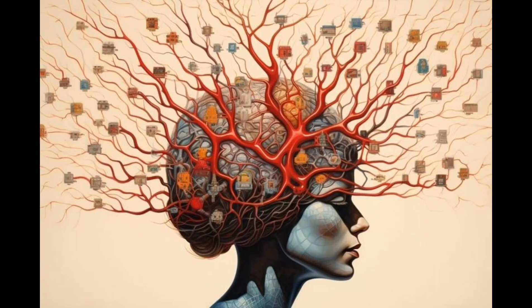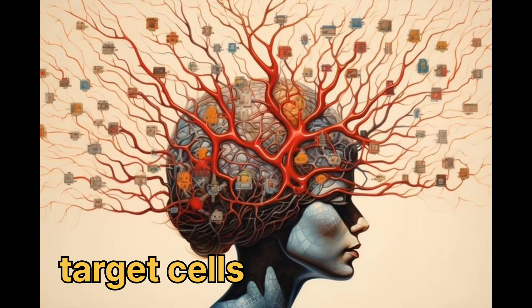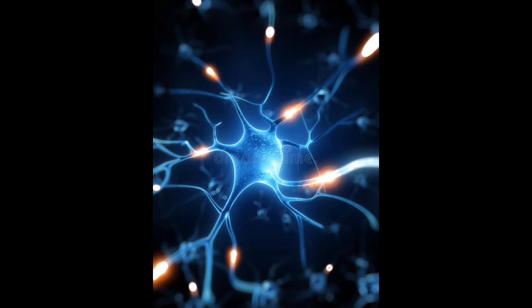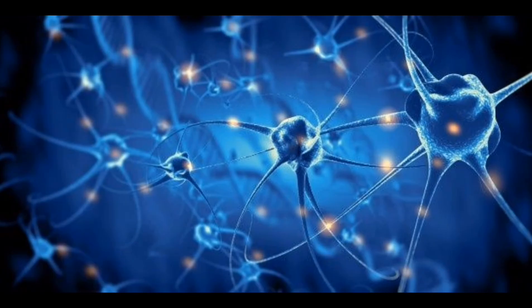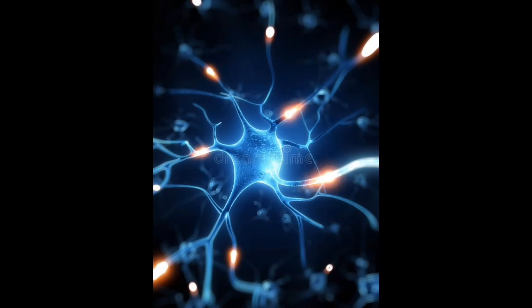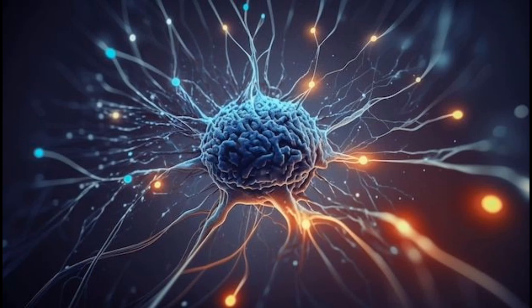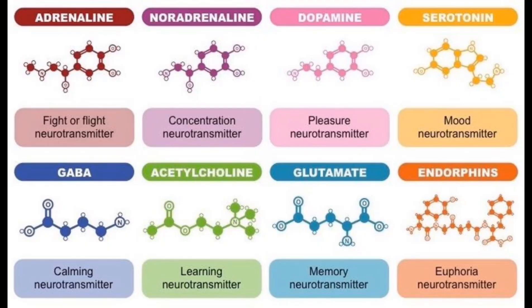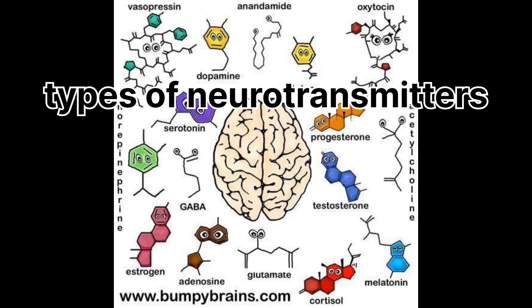This binding process triggers a response in the target cells, either exciting or inhibiting their activity. There are many types of neurotransmitters, each with specific functions and effects on the nervous system.